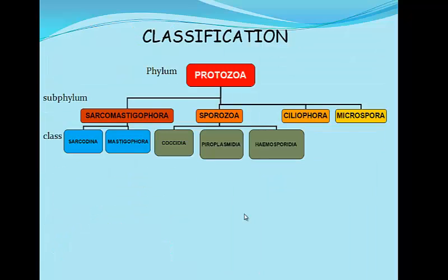This diagram seeks to simplify the classification of parasitic protozoa. There are four subphyla under the phylum Protozoa: Sarcomastigophora, Sporozoa, Ciliophora and Microspora. Sarcomastigophora is divided into two classes — Sarcodina and Mastigophora — while Sporozoa is divided into three classes: Coccidia, Pyroplasmidia and Hemosporidia. There are no classes for Microspora or Ciliophora.